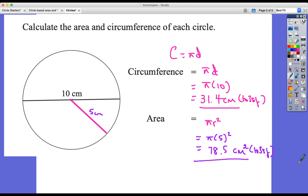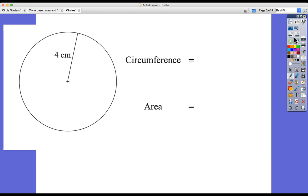Next question. This one is the same question but instead of being given diameter, we're given the radius. For the circumference, we can just use 2πr. So this is going to be 8π, which equals 25.1 centimeters.